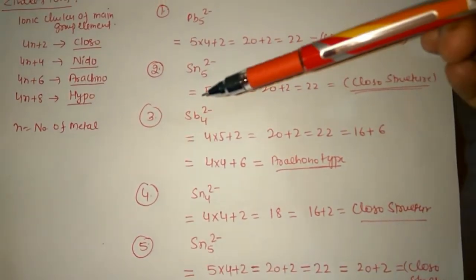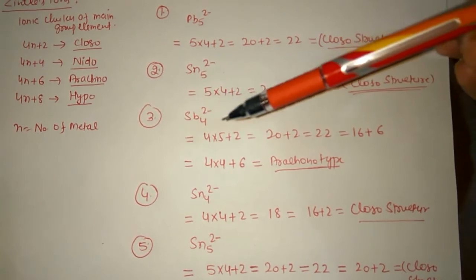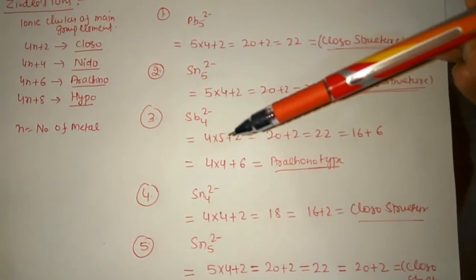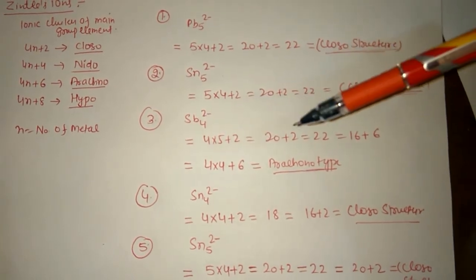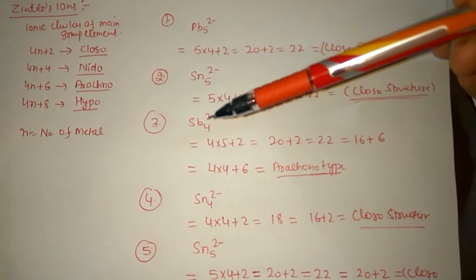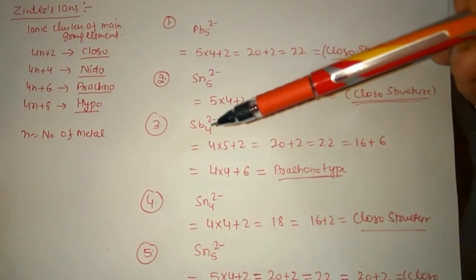If we have Sb4^2-, now each antimony contributes 5 electrons: 4×5+2, which is equal to 20+2, which equals 22. Now there are 4 atoms.